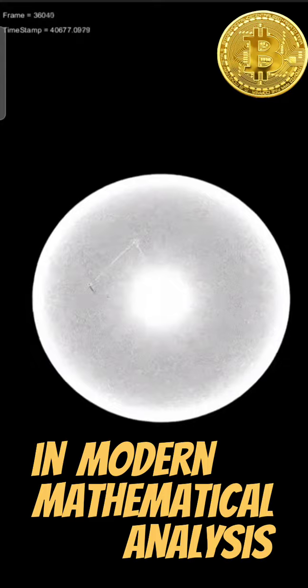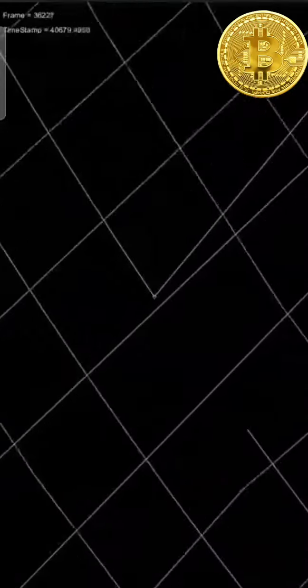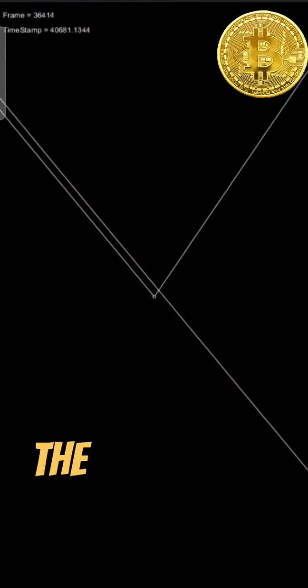In modern mathematical analysis, it is often instead defined without any reference to geometry; therefore, it also appears in areas having little to do with geometry, such as number theory and statistics.